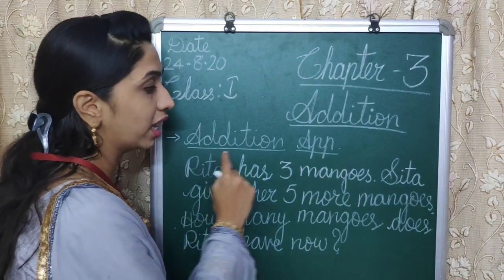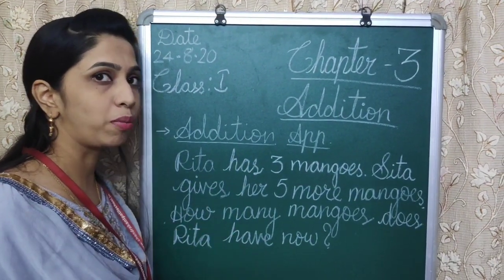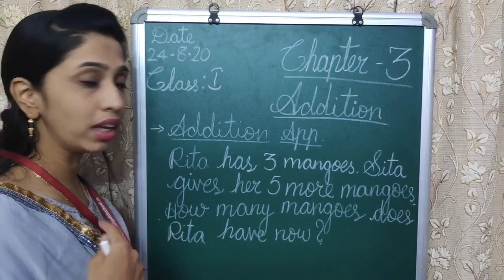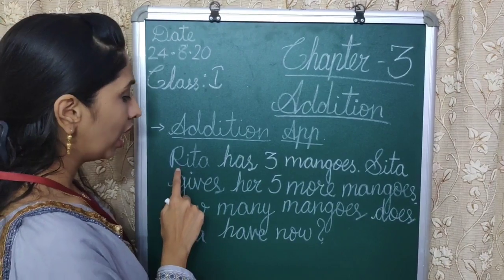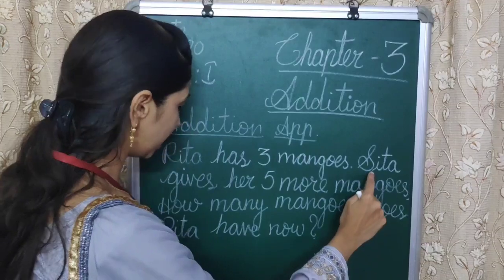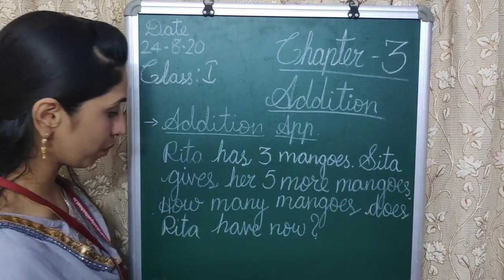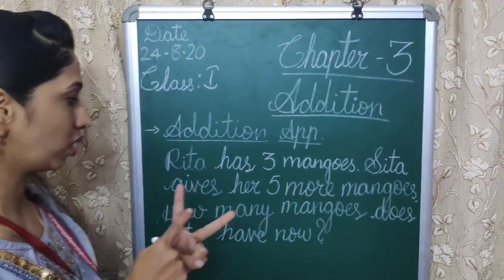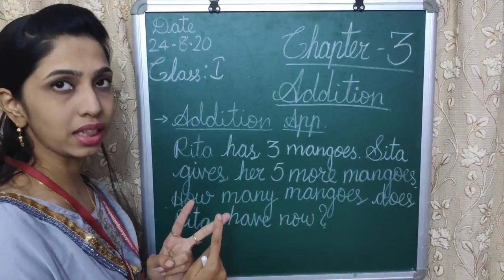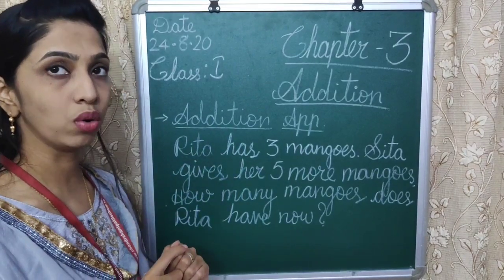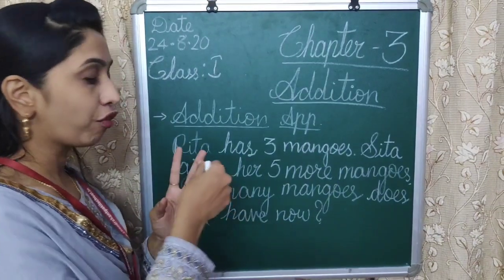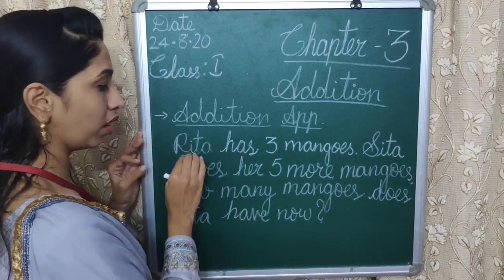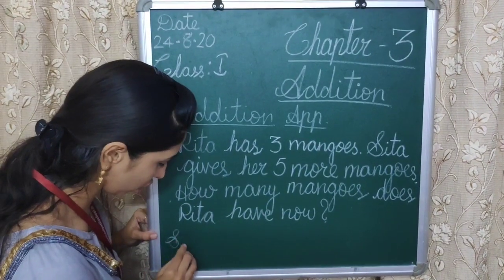Next, we have learned the addition word problem. This will give some word problems. Let us go through this question and understand what it is saying. Read with me: Rita has 3 mangoes. Her friend Sita gives her 5 more mangoes. How many mangoes does Rita have now? It means there are 2 girls — Rita and Sita. We have to find how many mangoes Rita has in total. Let us solve the sum.